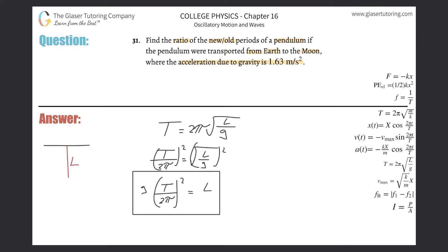Now, I can state this: that the new length, L sub n, will be equal to the new gravity multiplied by the new period divided by 2π, all squared.